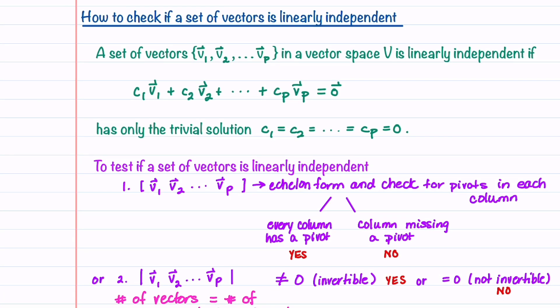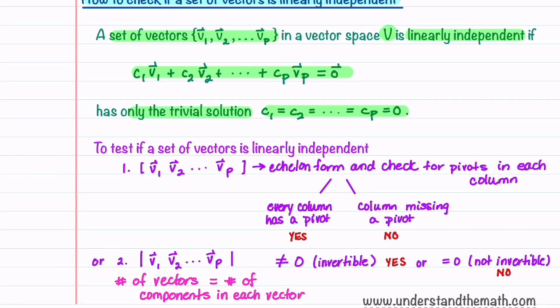I'm now going to outline a method for how we can check if a set of vectors is linearly independent. A set of vectors v1 through vp in a vector space V is linearly independent if the equation c1v1 + c2v2 + ... + cpvp = 0 has only the trivial solution, where all the c's are equal to 0. The first way to test this is to place the set of vectors in a matrix, reduce the matrix to echelon form, and check for pivots in each column. If every column has a pivot, the set is linearly independent. If a column is missing a pivot, the set will not be linearly independent.